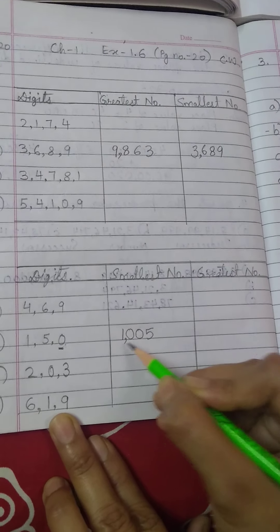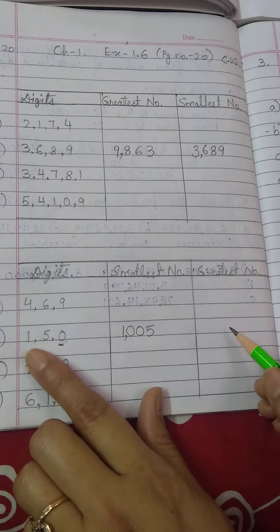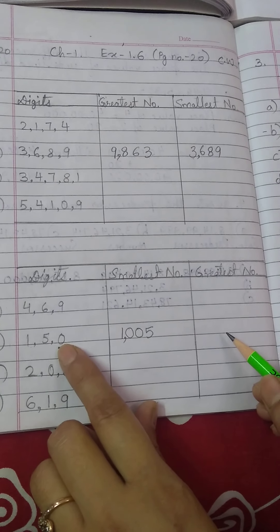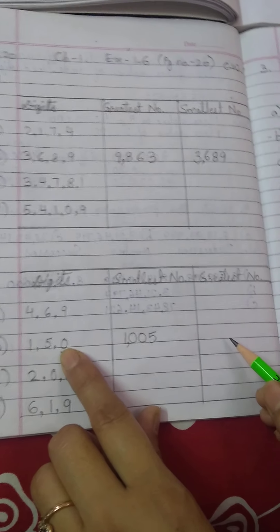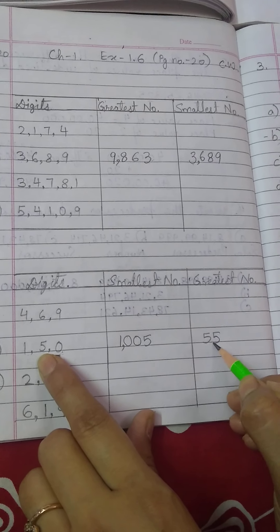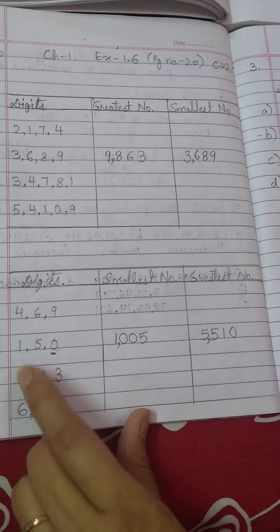5 will come. This is how we have made 4 digit number. And to make greatest number, we will arrange them in which order? Descending order. Bigger to smaller, 5, 1, 0. Aur kaun sa number repeat karenge hum? Bada number repeat karenge. So, we will write 5 2 times, then 1, 0. This is how we will make the greatest number.